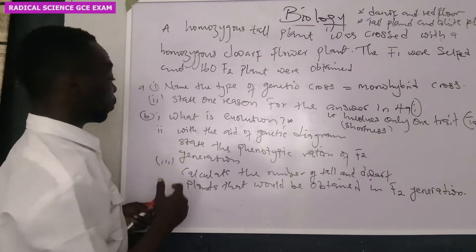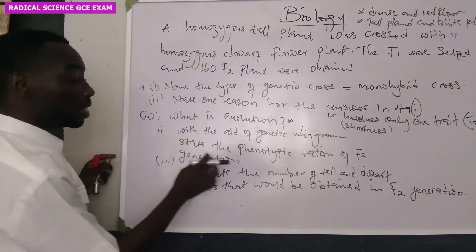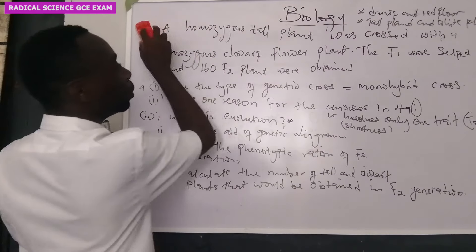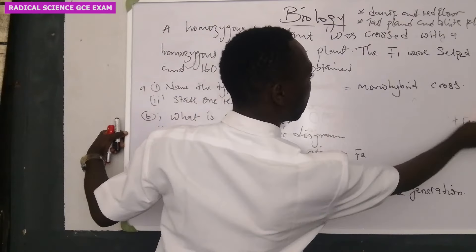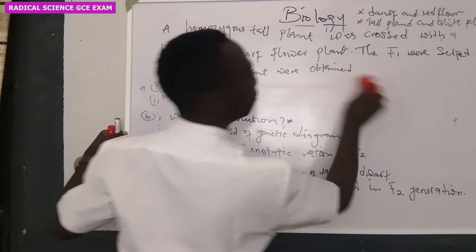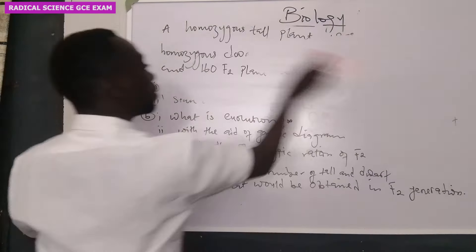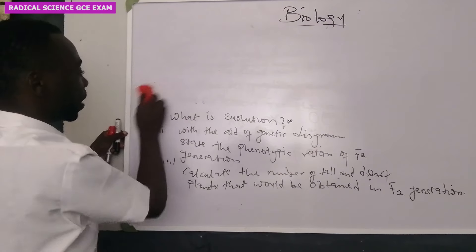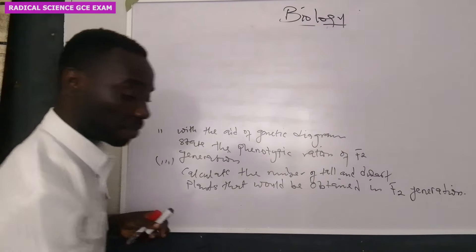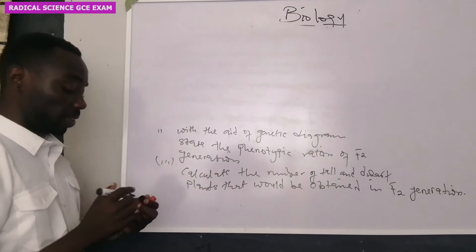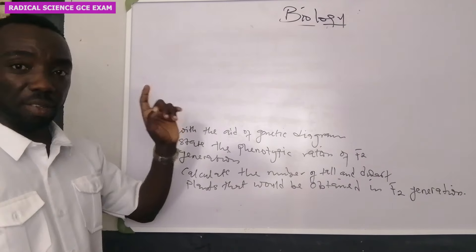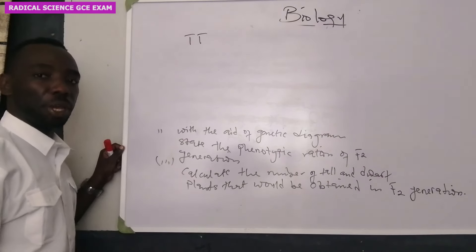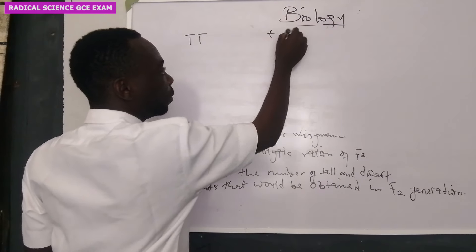Now let's take a look at this particular question which says: with the aid of a genetic diagram, state the phenotypic ratio of F2 generation. For us to do this, we have to work on the cross. We are talking about the gene of tallness and dwarf. Let us take the gene of tallness to be capital T, while that of dwarf, let's use small t.